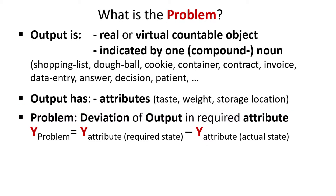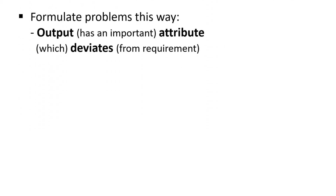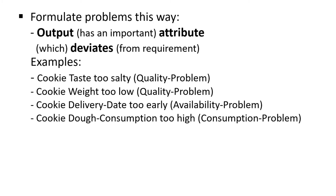Do you know of problems that outputs have in your work environment? Every problem can be formulated within the following framework: output has an attribute which deviates from requirements. For example, cookie taste too salty, cookie delivery too late, or cookie dough consumption too high.